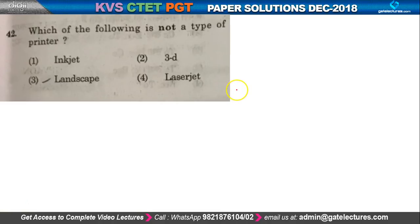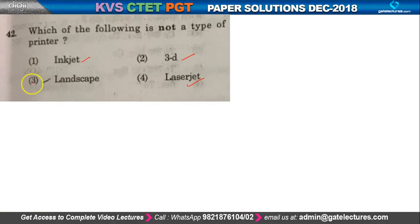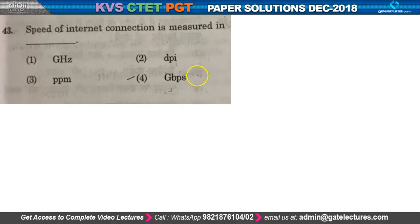Question number 42: which of the following is not a type of printer? Inkjet is a printer type, 3D is a printer type, laser jet is also a printer type. Landscape is the one which is not a type of printer.